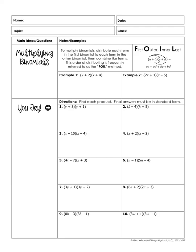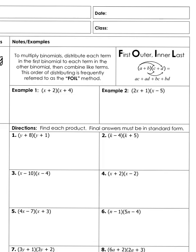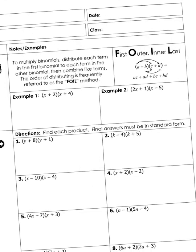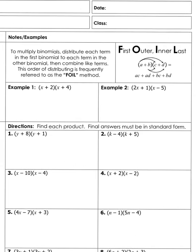Hi guys, today's lesson is on multiplying binomials. Yesterday you learned about multiplying monomials. Today we're going to multiply two things at a time — something that has two terms. In order to multiply binomials, you have to distribute each term in the first binomial to each term in the other binomial.